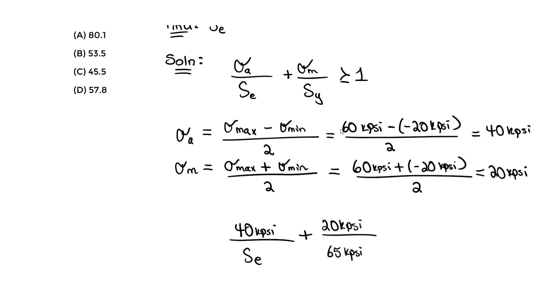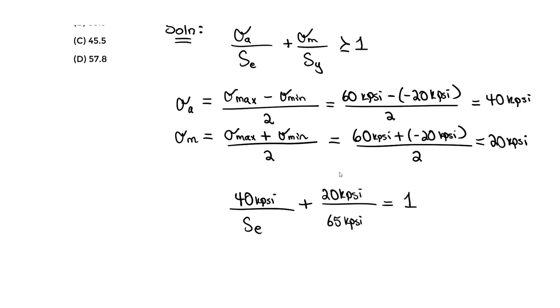S_y is the yield, so it's 65 kpsi. It has to be equal or greater than one, so let's just set it equal to one. Then you solve for SE—just do the math, simple algebra, or use the solver. I got 57.8 kpsi.